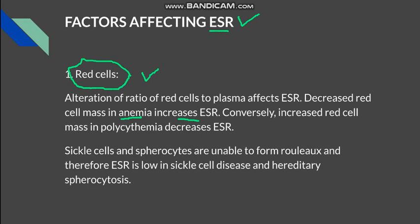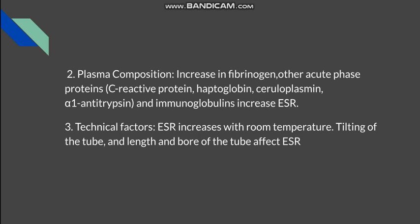Secondly, if there is an increase in red cell mass, as in polycythemia, this will decrease the ESR. If there is a change in the shape of red blood cells, such as sickle cells or spherocytes — rouleaux formation only occurs because of the biconcave shape of red blood cells. Sickle cells and spherocytes will not form rouleaux, and because they will not form rouleaux, the ESR will be low as the red cells will not fall down.